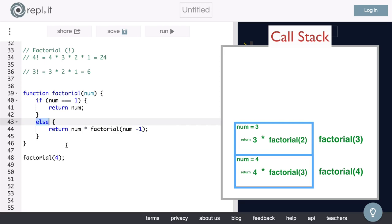Now, we call factorial with 2. In this function, num is equal to 2, and we return 2 times factorial of 1.